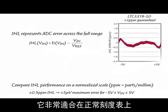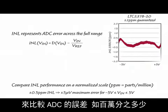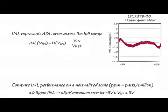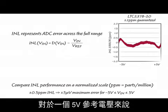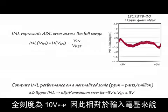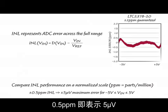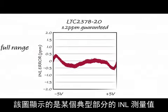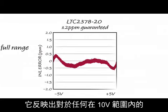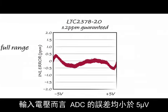It is preferable to compare A2D errors on a normalized scale, such as parts per million. For a 5 volt reference voltage, full scale is 10 volt peak to peak, and hence half a ppm is 5 microvolts when referred to the input. This figure here shows INL measured for a typical part, reflecting that the A2D error is less than about 5 microvolts for any input voltage in a 10 volt range.